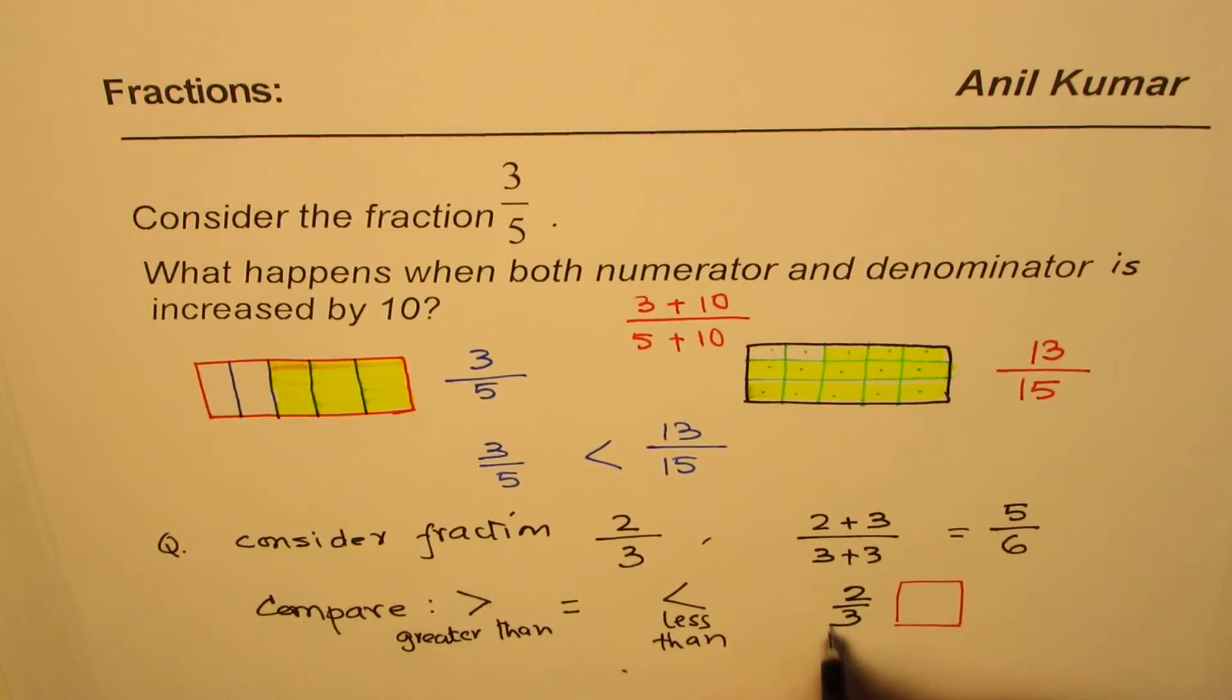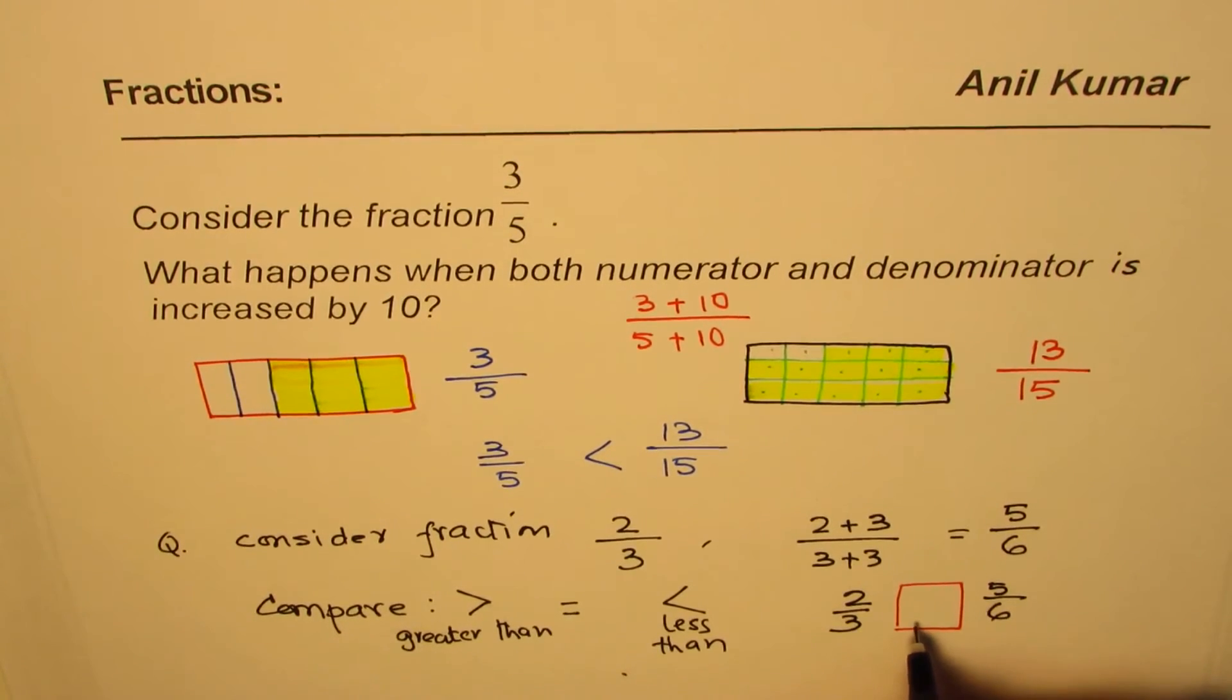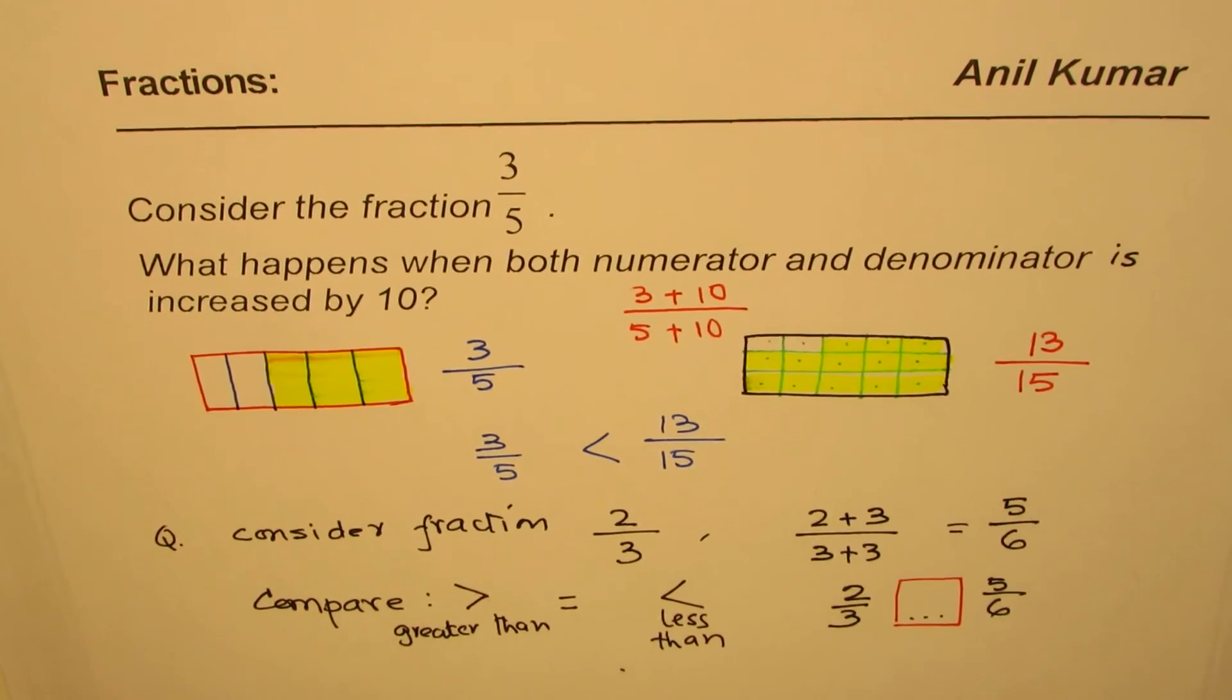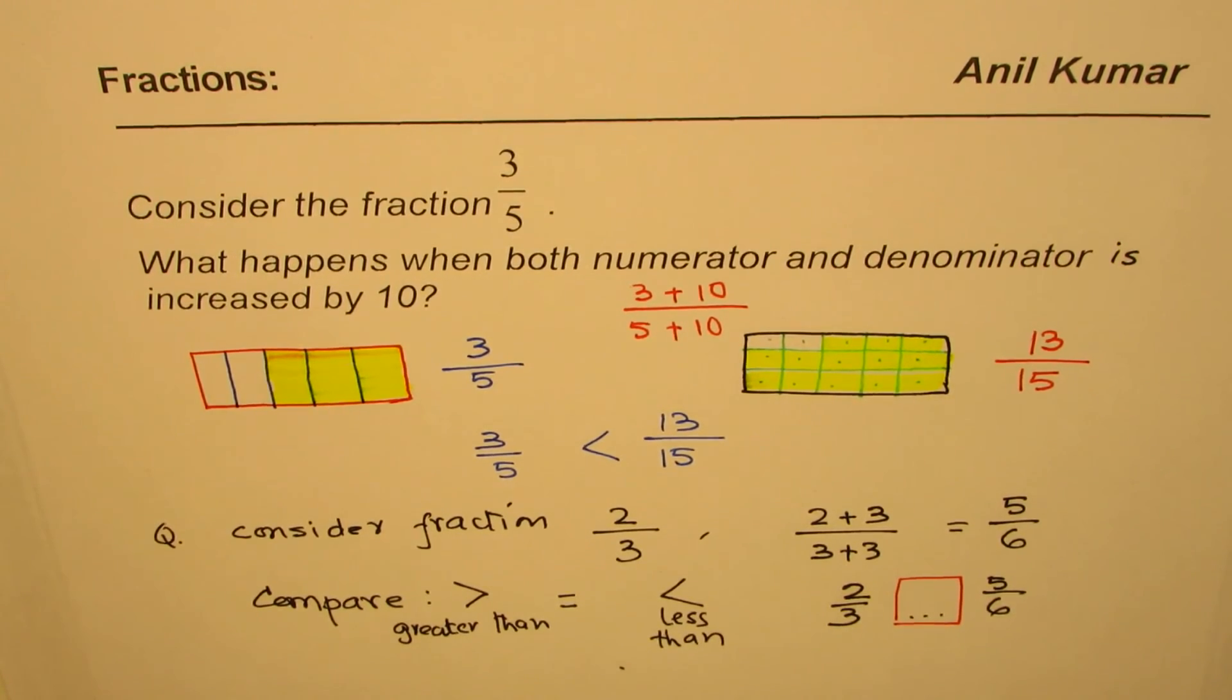2 over 3 is greater, or 5 over 6. So you have to write the symbol in between. One of these, just as I did. But you have to explain your answer using area model, which we used, or any other strategy. So that's the question for you.